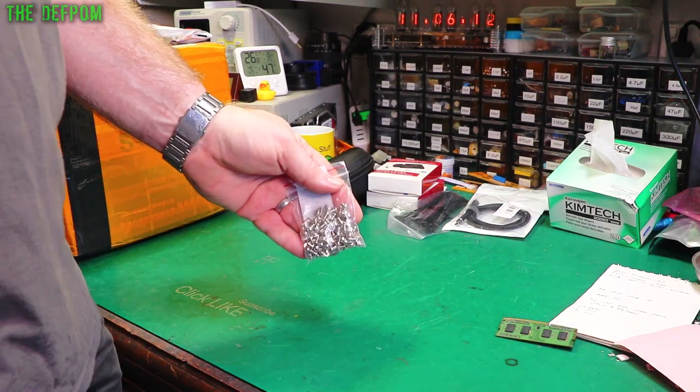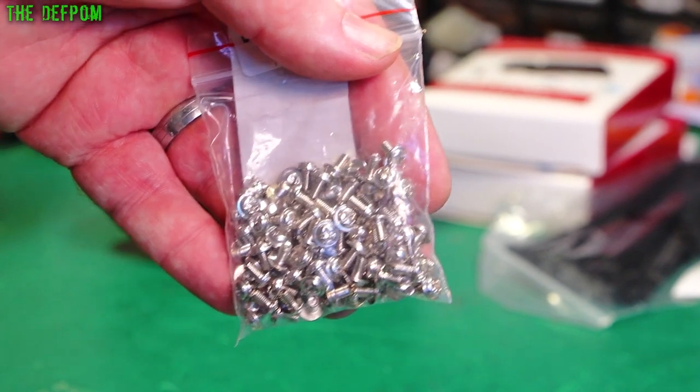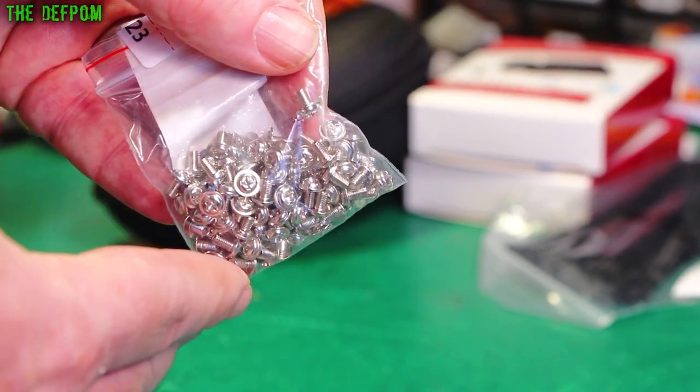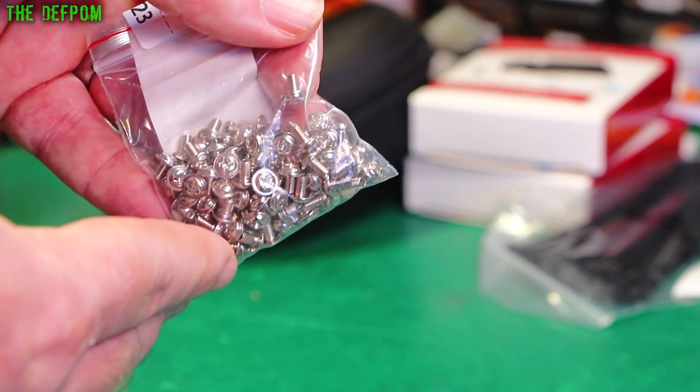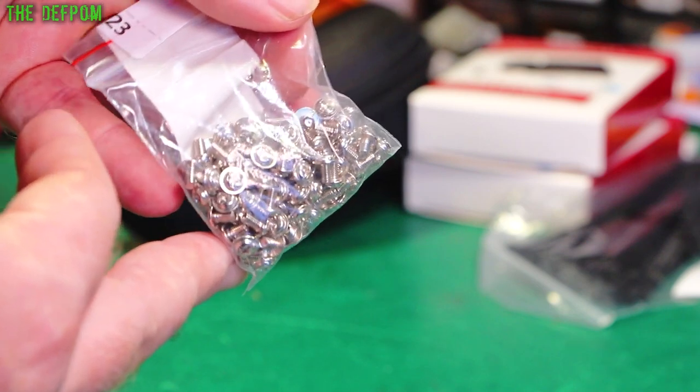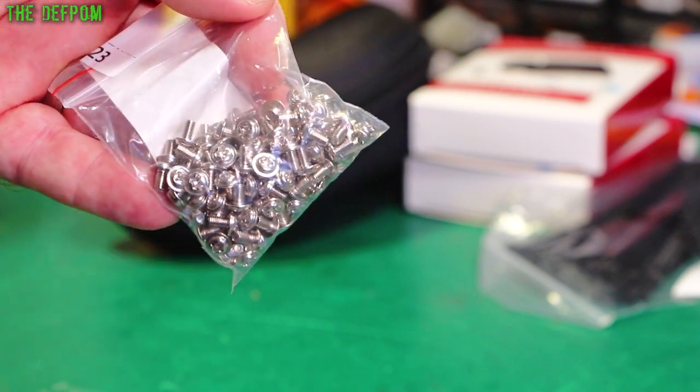Screws. So these aren't particularly exciting. These are just some 3mm screws with built-in washers. It gives them a large surface area. So if you're trying to pin down something like a piece of plastic or something, increase the surface area, reduce the chance of damage and digging in that sort of stuff. I didn't have any of these. I'd been mean to get some. So I've got some.